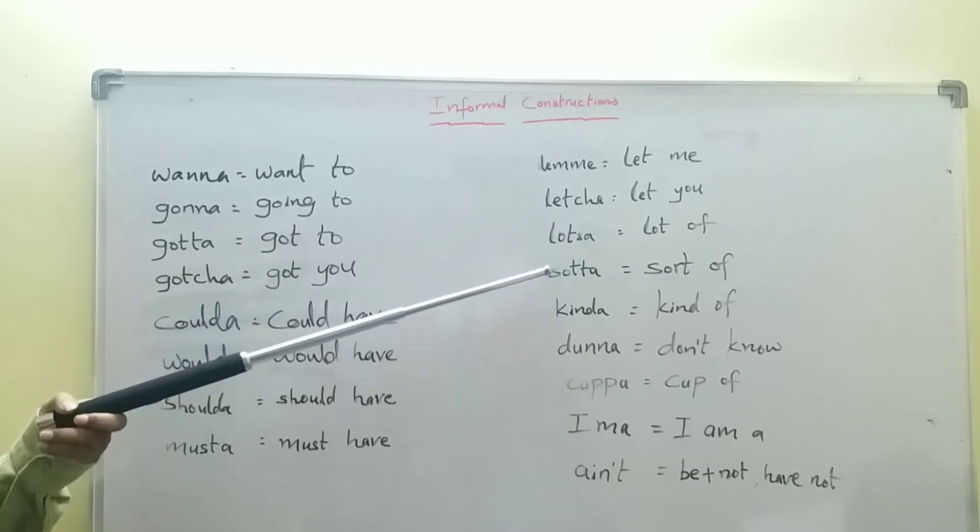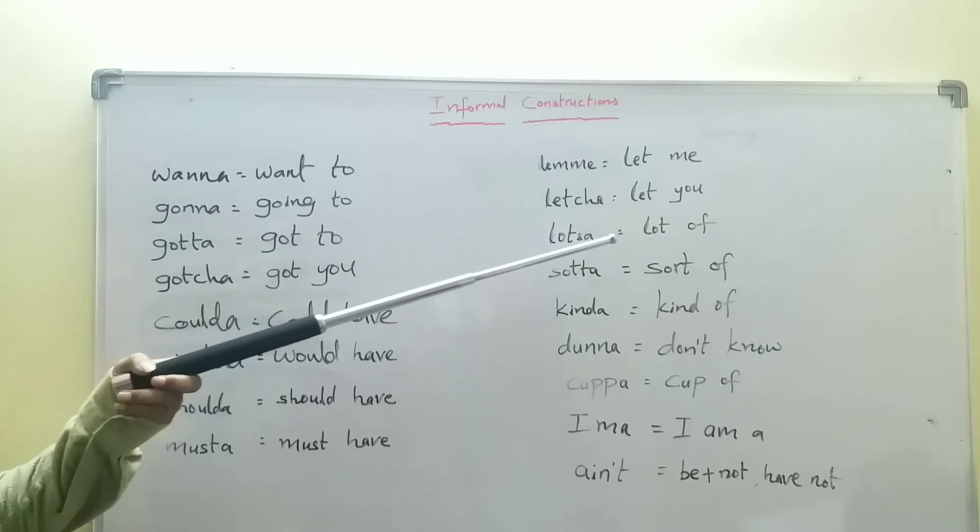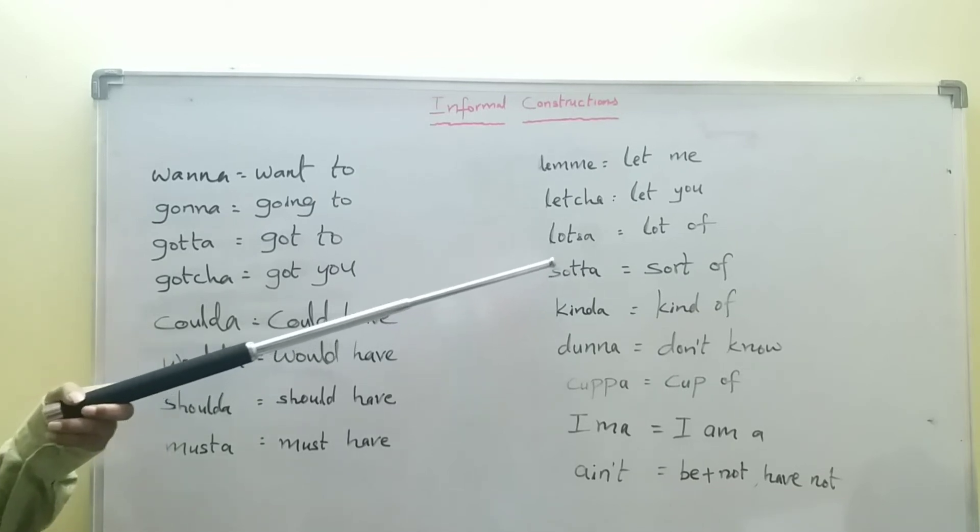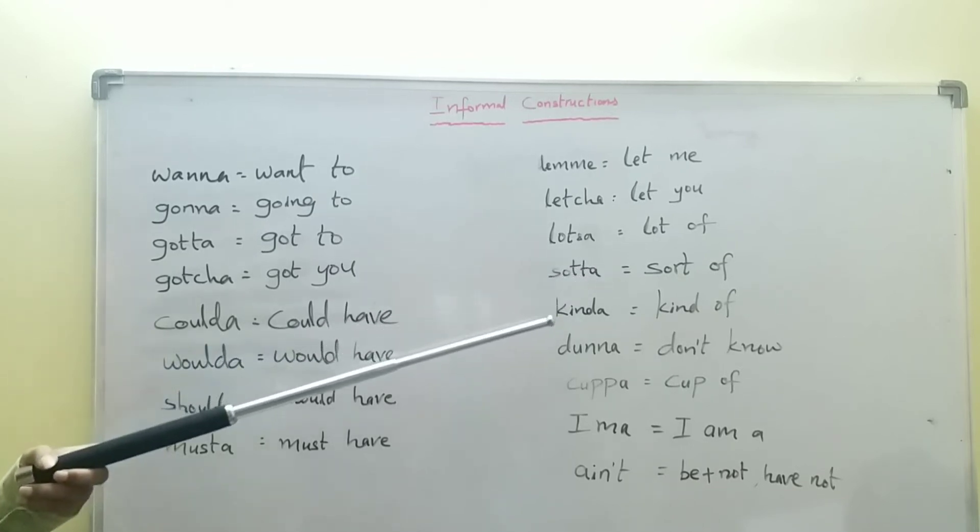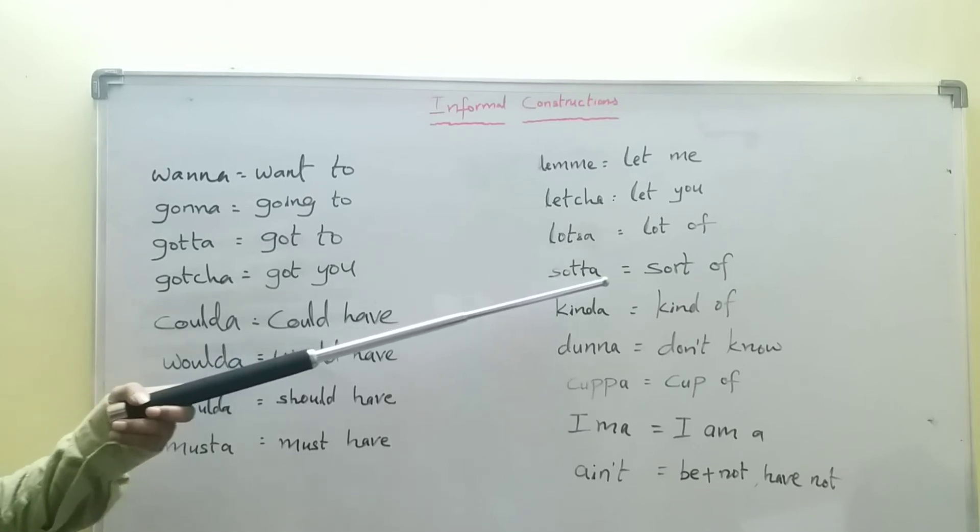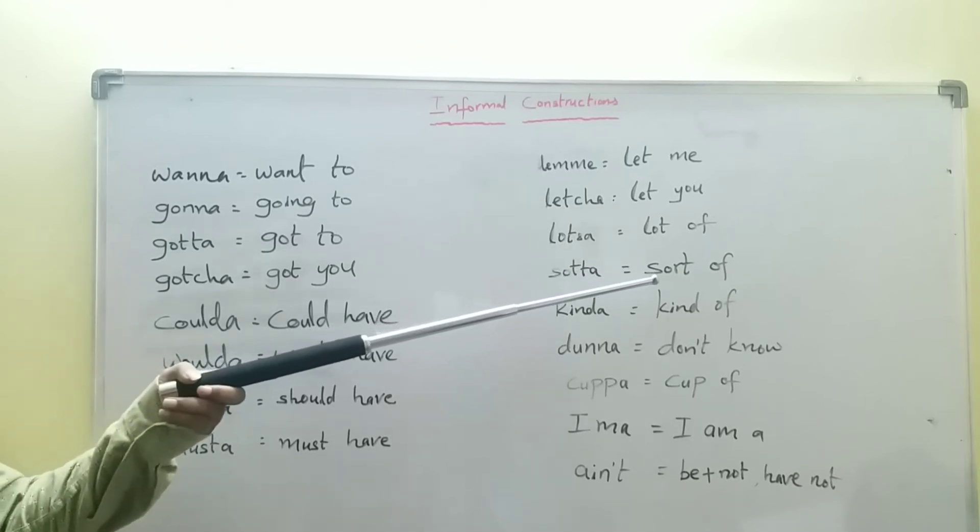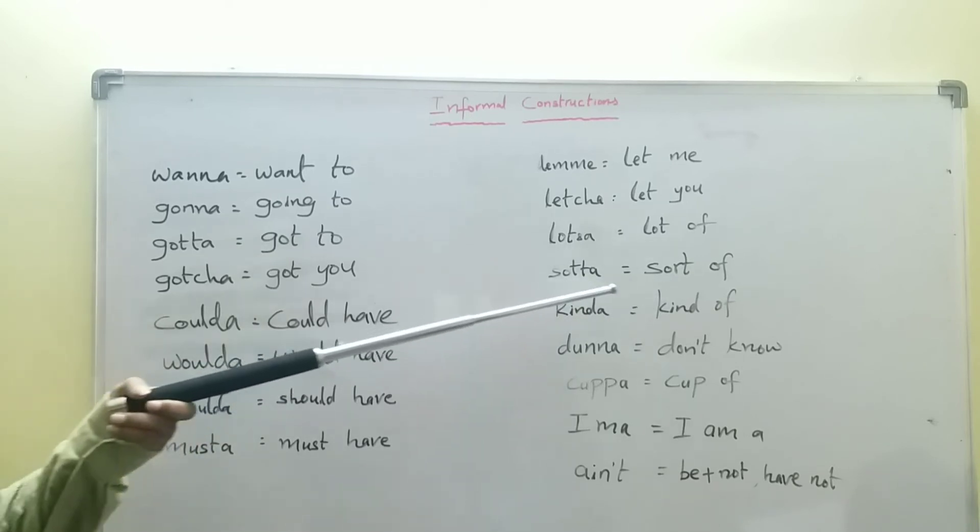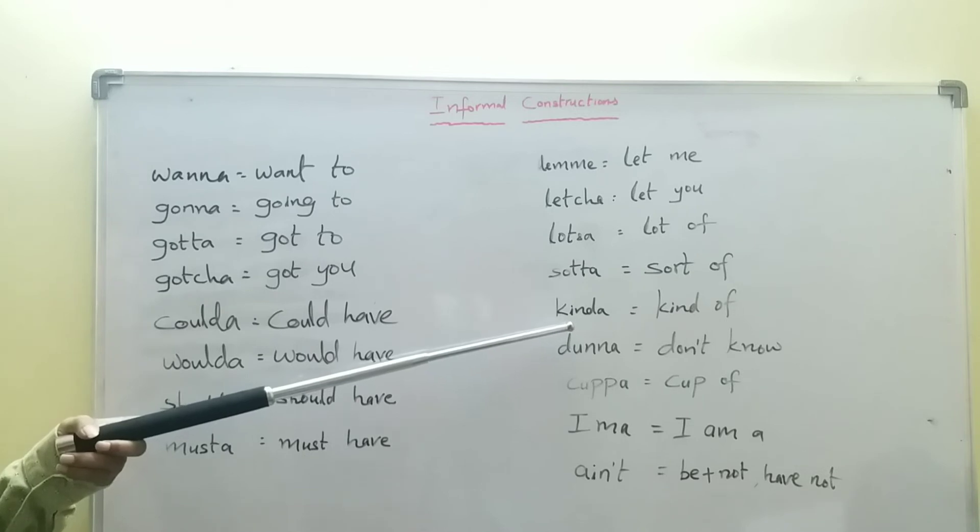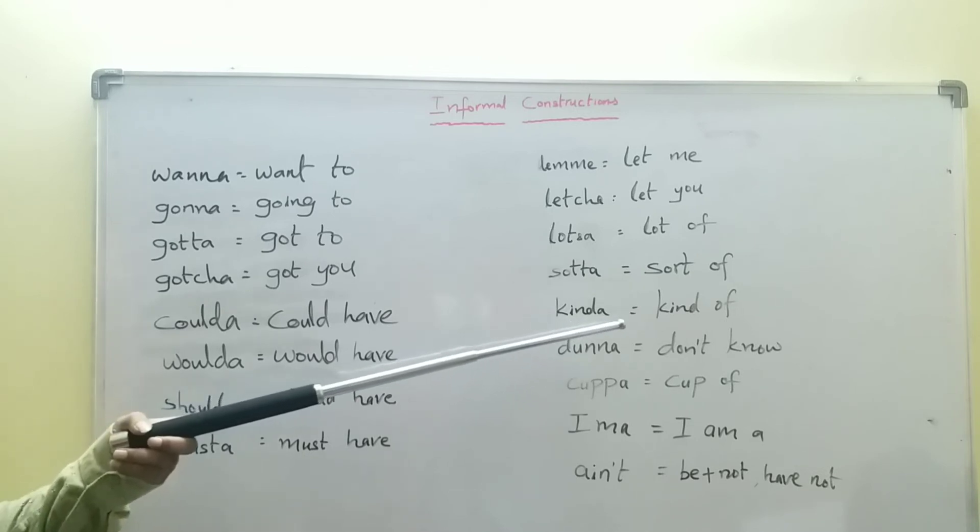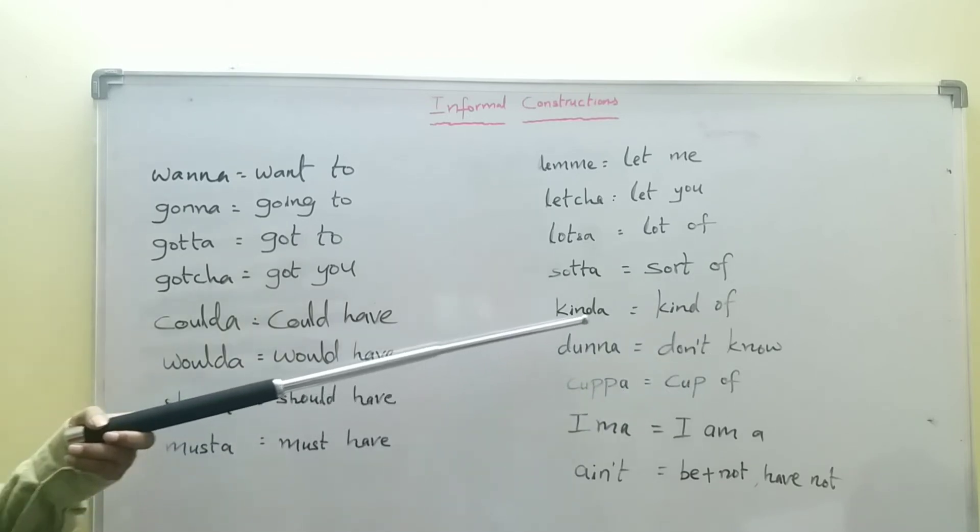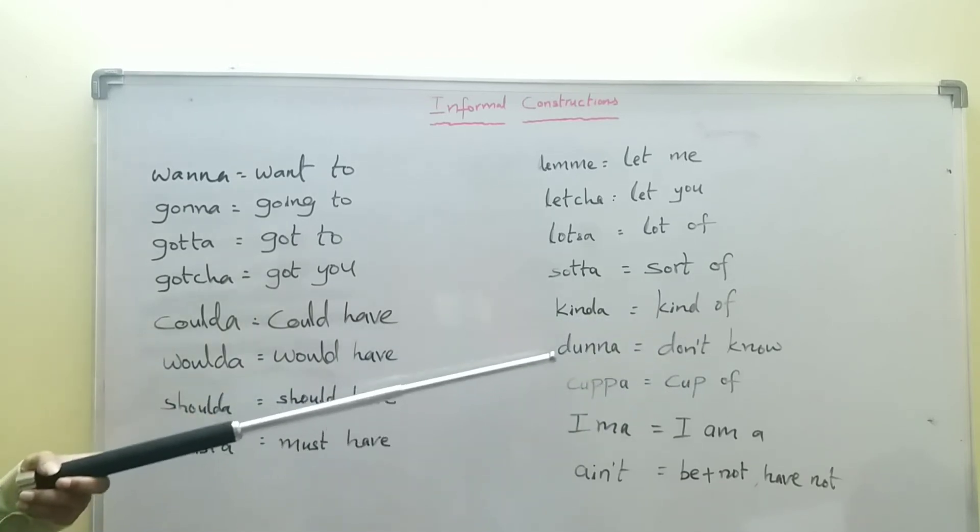Lotta means 'lot of.' 'A lot of people gathered at the venue' becomes 'A lotta people gathered at the venue.' Sorta means 'sort of': What sorta man it is. Kinda means 'kind of': What kinda fruit it is.